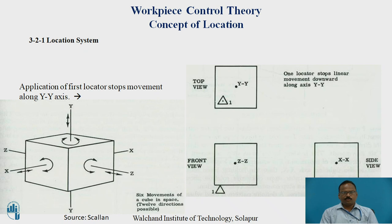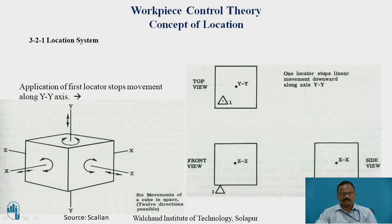Consider a cube assumed to be in space. This is the X-axis of the workpiece, this is the Y-axis, and this is the Z-axis. Along the X-axis there will be two translational movements — one on each side. Along Y-Y there are two moments: one upward and one downward. Along Z there are two moments as well. So along each axis there are two movements, giving six moments of translation in total.